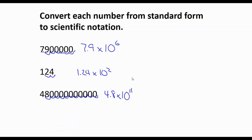And there's the answers for each. So the first one, you moved it 6 places, so it's 7.9 times 10 to the 6th power. The second one, that was a small number, 124. You move it 2 places, so 1.24 times 10 to the 2nd.